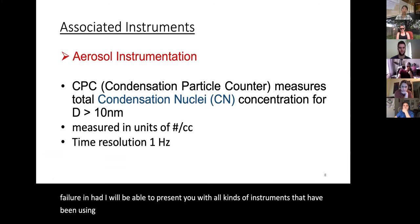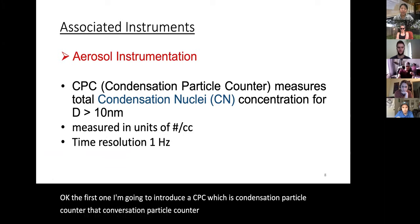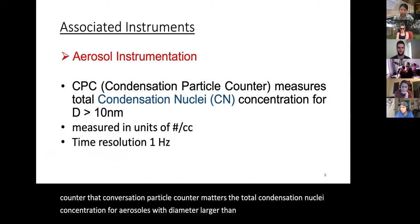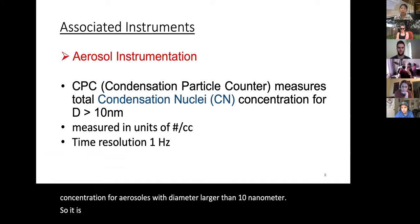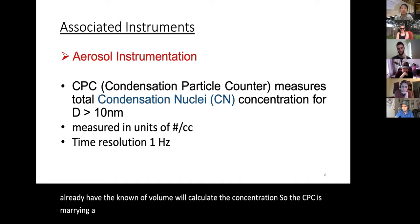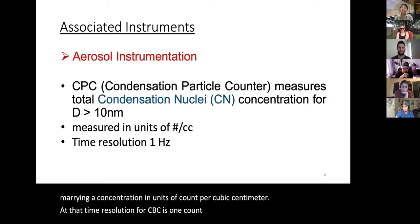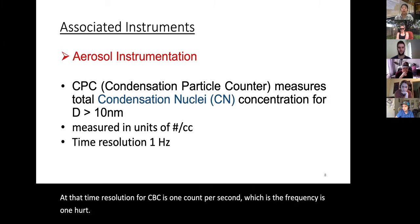The first instrument is the CPC — the Condensation Particle Counter — which measures total condensation nuclei concentration for aerosols with a diameter larger than 10 nanometers. It counts the total particle number collected within a known volume and calculates concentration in units of count per cubic centimeter. The time resolution for the CPC is one count per second, or a frequency of 1 Hz.